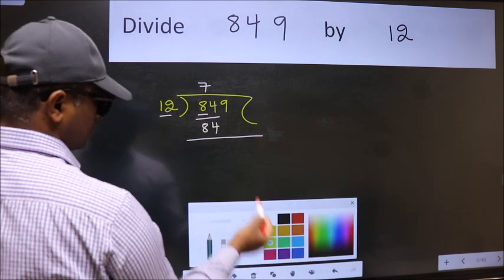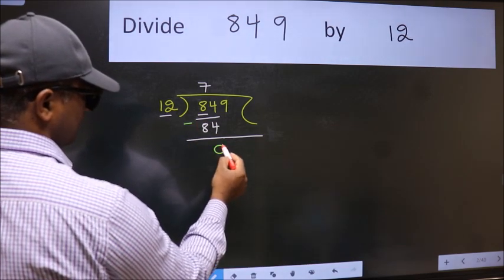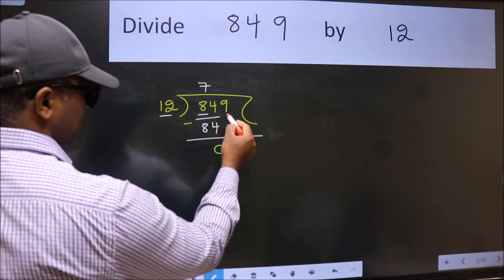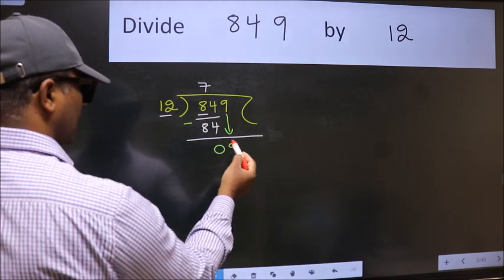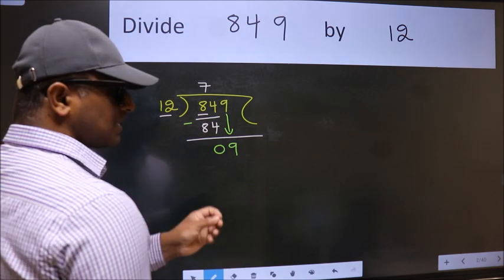Now we should subtract. We get 0. After this, bring down the beside number. So 9 down. After this step, the mistake happens.